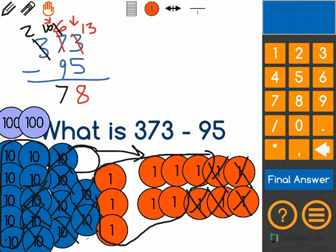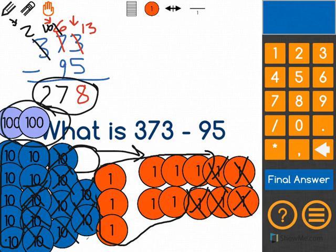And then I do the 100th place value. 2 minus nothing is 2. 278 is my final answer and I can check that by counting the rest that are left over in the diagram.